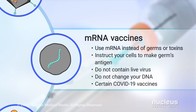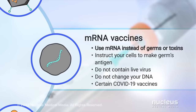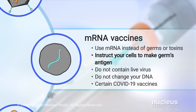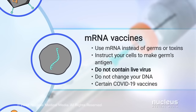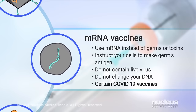Instead of using germs or toxins, mRNA vaccines contain a special type of RNA called messenger RNA or mRNA. mRNA instructs your cells to make the germ's antigen, which triggers an immune response. These vaccines do not carry live virus and do not change your DNA. Examples are certain COVID-19 vaccines.